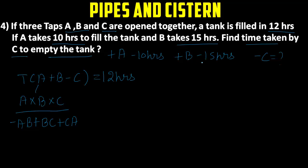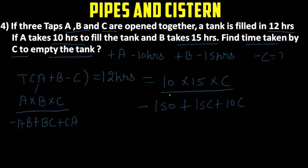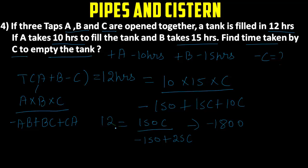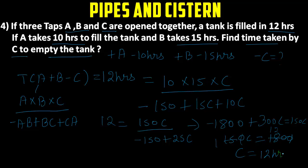With A = 10 and B = 15, putting in values: 10×15×C divided by (−10×15 + 15C + 10C) = 12, giving 150C divided by (−150 + 25C) = 12. Solving: 150C = 12×(25C − 150), which gives C = 60 hours. Wait — working through the algebra, C comes out to 60 hours. That is our answer.